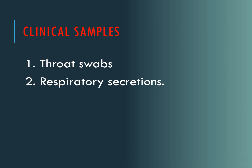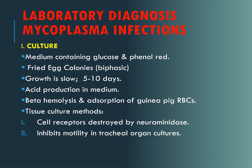For diagnosis, clinical symptoms are assessed and throat swabs or respiratory secretions can be collected. The first approach for lab diagnosis is culture, done on either liquid or solid medium. The medium should contain glucose and the indicator phenol red. On solid medium, it shows typical fried egg colonies which are biphasic. Growth is slow, appearing in 5 to 10 days. Acid production in the medium is detected by the phenol red indicator.